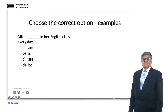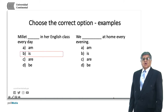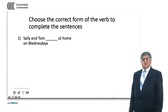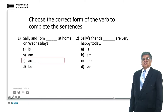Let's do some examples. 'Millet' is the third person singular, so the corresponding form is 'is'. 'We' is plural and the corresponding form is 'are'. So: Millet — singular with 'is'; we — plural with 'are'. 'Sally and Tom' is also plural, and the plural form is 'are': 'Sally and Tom are at home on Wednesdays.' 'Sally's friends' is also plural because the sentence refers to 'friends' rather than to 'Sally's'. Friends is the main topic, so the form is also 'are'.